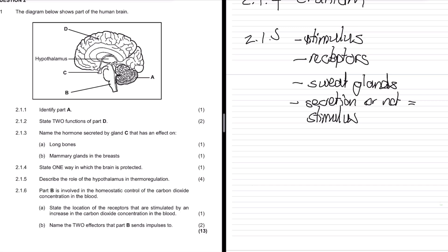The very last one - part B is involved in homeostasis control of carbon dioxide concentration in the blood. State the location of the receptors stimulated by an increase in carbon dioxide concentration in the blood. This is 2.1.6a. Carotid artery. And B, name the two effectors of this impulse.